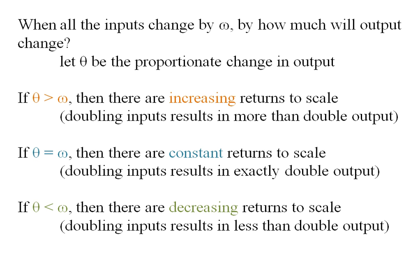And if theta is less than omega, then there are decreasing returns to scale. So if I double my inputs, I'll get less than double the output.